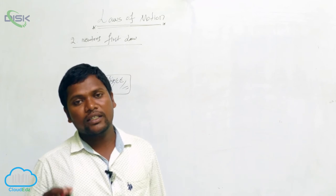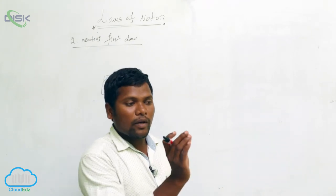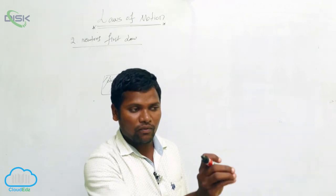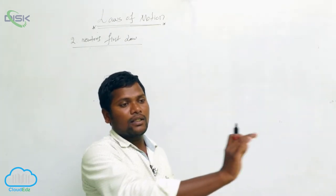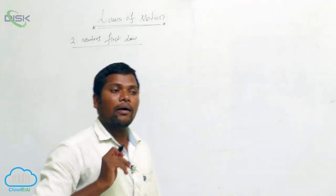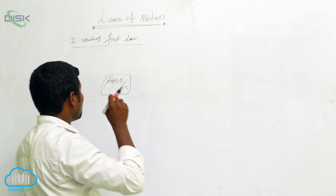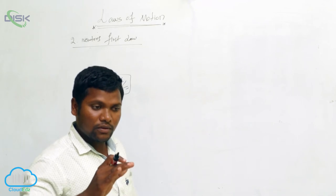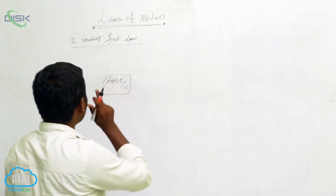Newton's first law also tells us about inertia. Another name for Newton's first law is inertia. For example, take a door: if I apply force at the end it moves, if I apply force lower it also moves. The door is fixed at one end and moves slowly — that force acting on it is also called inertia. Newton's first law states that a body always tends to remain in the same state unless an external force acts on it.